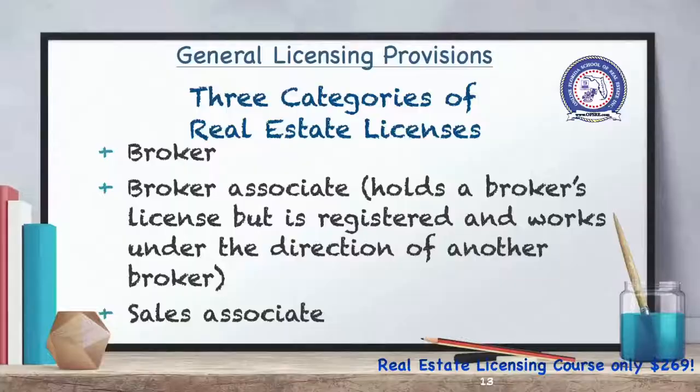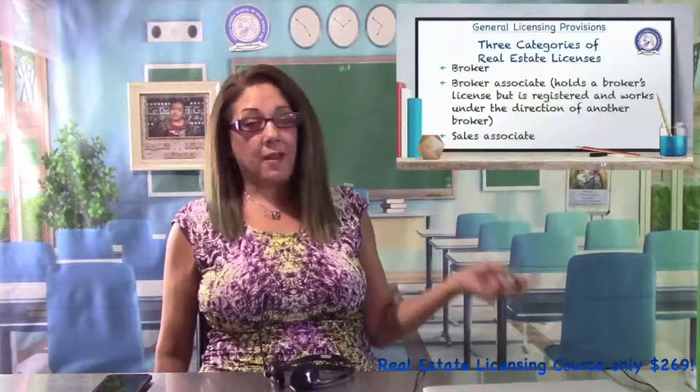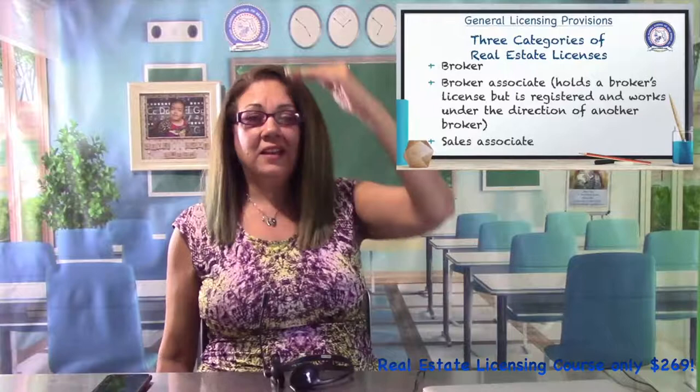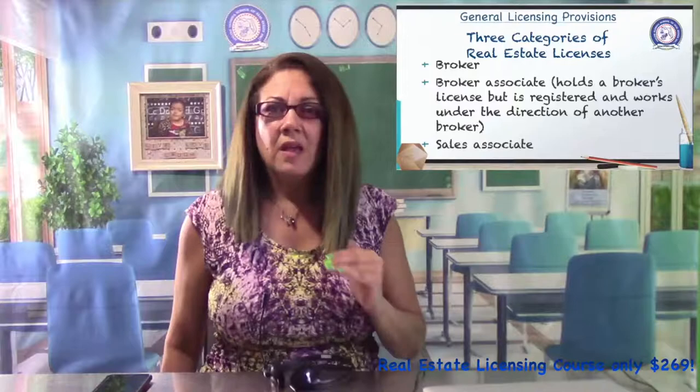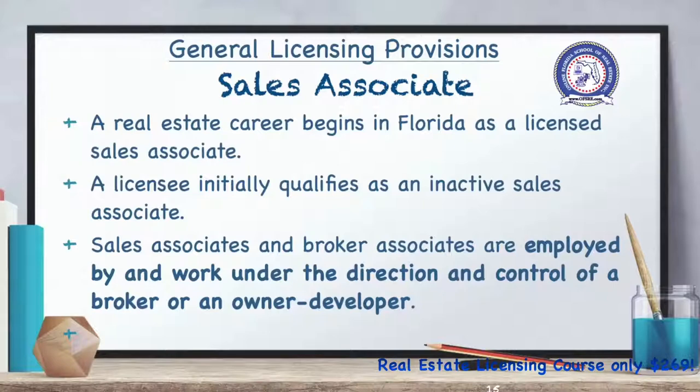There are three categories of real estate licenses: broker, broker associate, and sales associate. To get your license, you start as a sales associate, then you can become a broker, and then you can be a broker associate. A sales associate must work under the direction and control of an employer — most often a broker; however, a sales associate may choose to work for an owner developer.